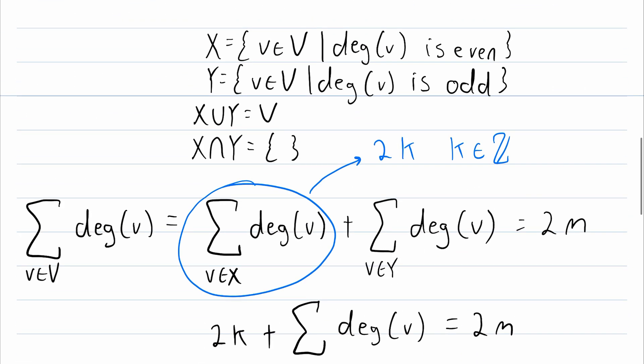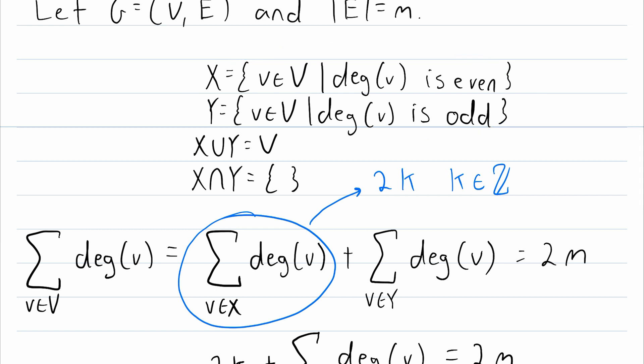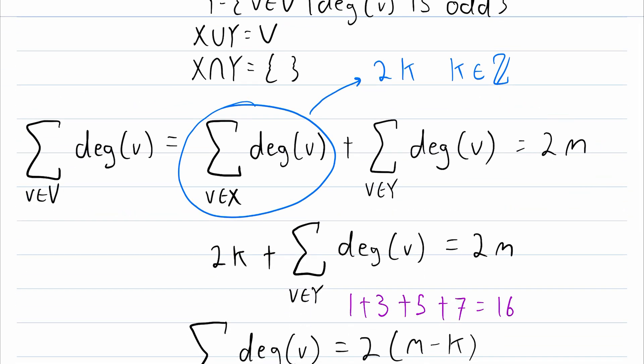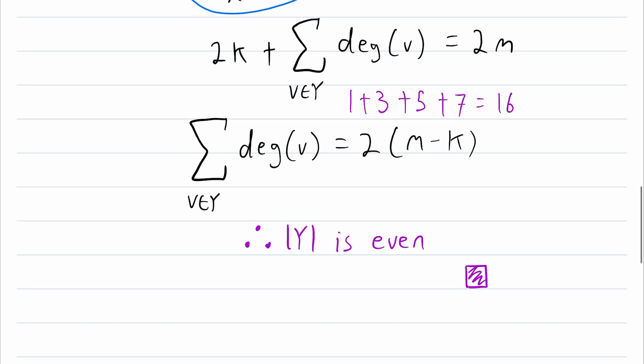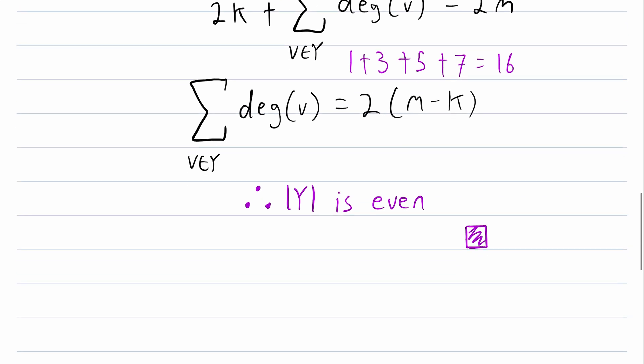So, we just do a little bit of partitioning. Sprinkle in a little bit of first theorem of graph theory. And, a little bit of number theory. And, we arrive at our result, that every graph has an even number of odd degree vertices. So, I hope this video helped you understand the proof of this neat little graph theory result.